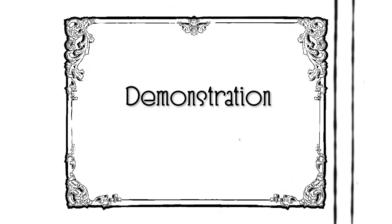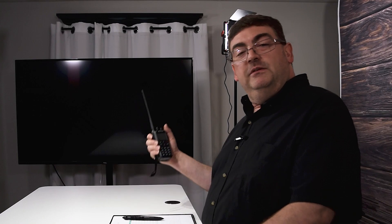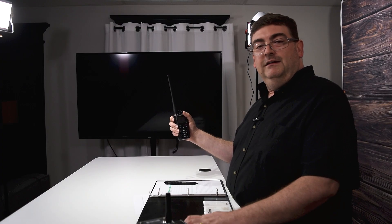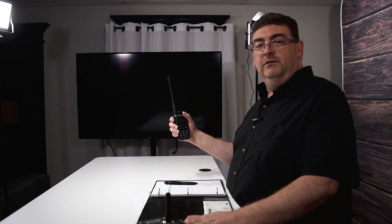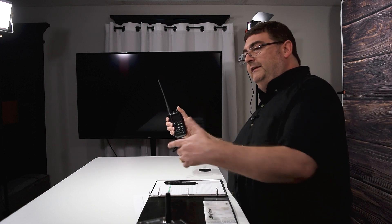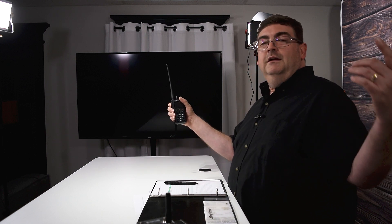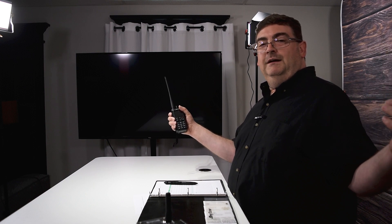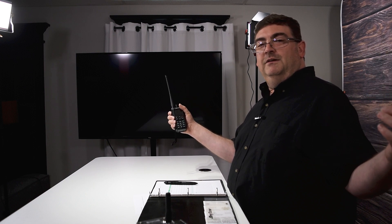Now we come down to the fun part. We're going to go ahead and make a contact here. We're going to use the steps of etiquette that we just discussed here today. As soon as I key this, you should hear activity. There will be a DMR ID with my call sign sent out over the network — it'll be visible on their screen who's keyed up. It'll still be incumbent upon me to identify every 10 minutes once I key in.